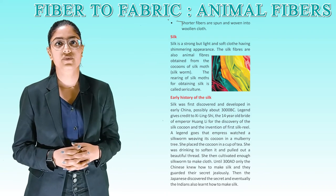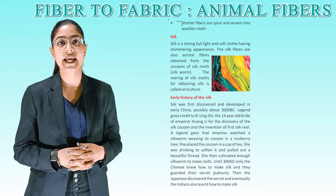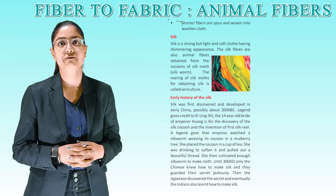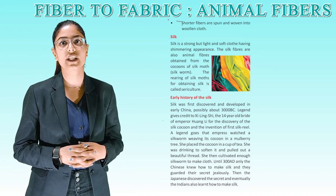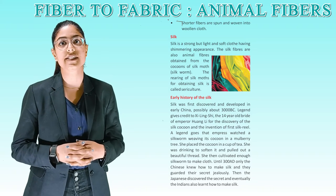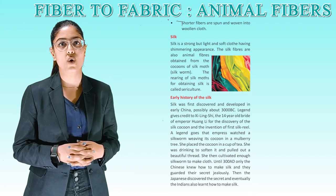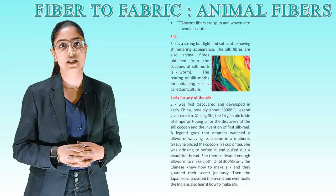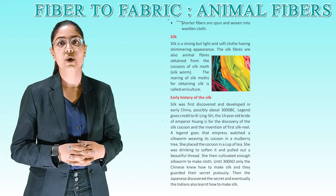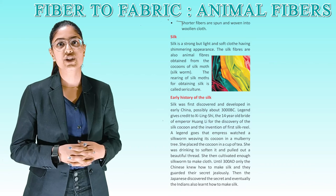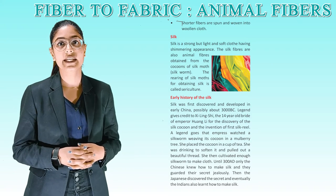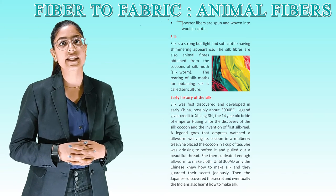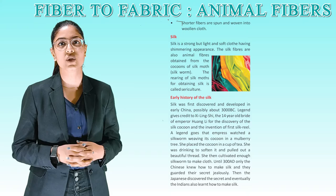Early history of silk: silk was first discovered and developed in early China, possibly around 3000 BC. Legend gives credit to Zilin Shi, the 14-year-old bride of Emperor Huangdi, for the discovery of the silk cocoon and the invention of the first silk reel. A legend says the Empress found a silkworm cocoon in a mulberry tree, placed it in her cup of tea to soften it, and pulled out a beautiful thread. She then cultivated enough silkworms to make cloth. Until 300 AD, only the Chinese knew how to make silk and guarded their secret jealously. Then the Japanese discovered the secret, and eventually the Indians also learned how to make silk.